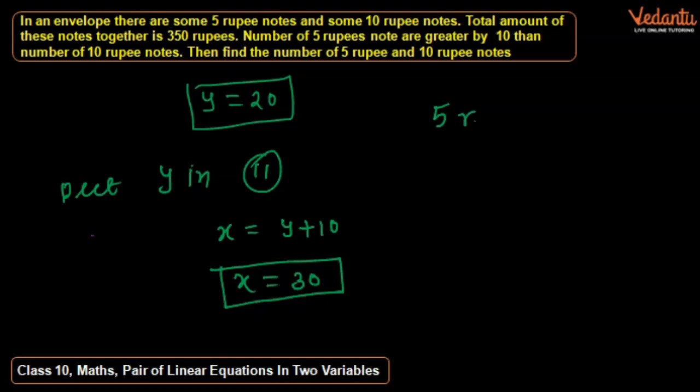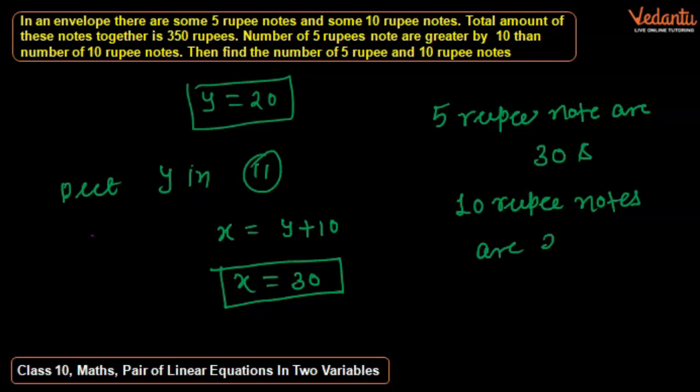So 5 rupee notes are 30 and 10 rupee notes are 20. That is the answer to your question. Thank you for watching my video. Please subscribe to our YouTube channel. Thank you.